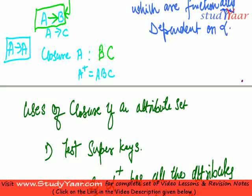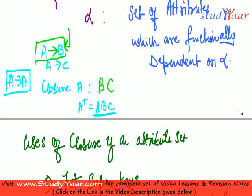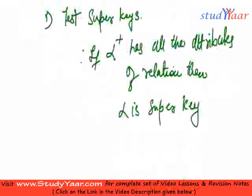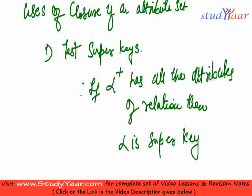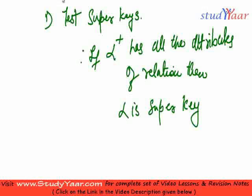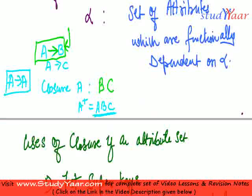So now since closure of A has A, B, C or it has all the attributes of my relation. Let's suppose my relation only has A, B, C, three attributes. Then I can say A is my super key. So that was about test of super keys, how to test super keys.